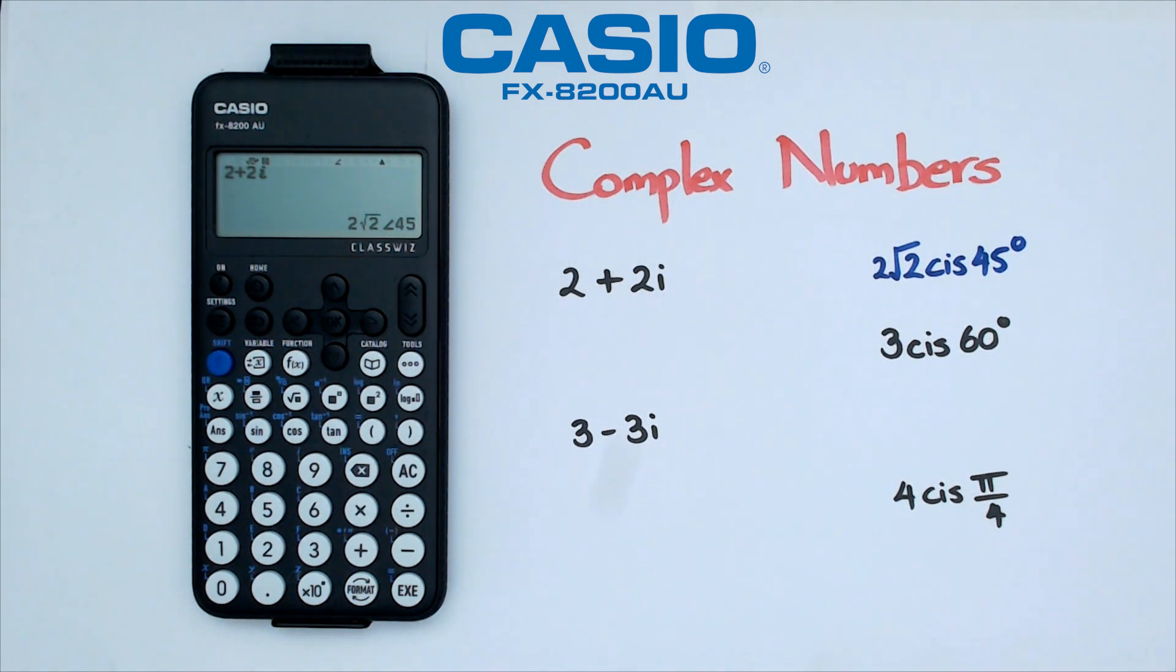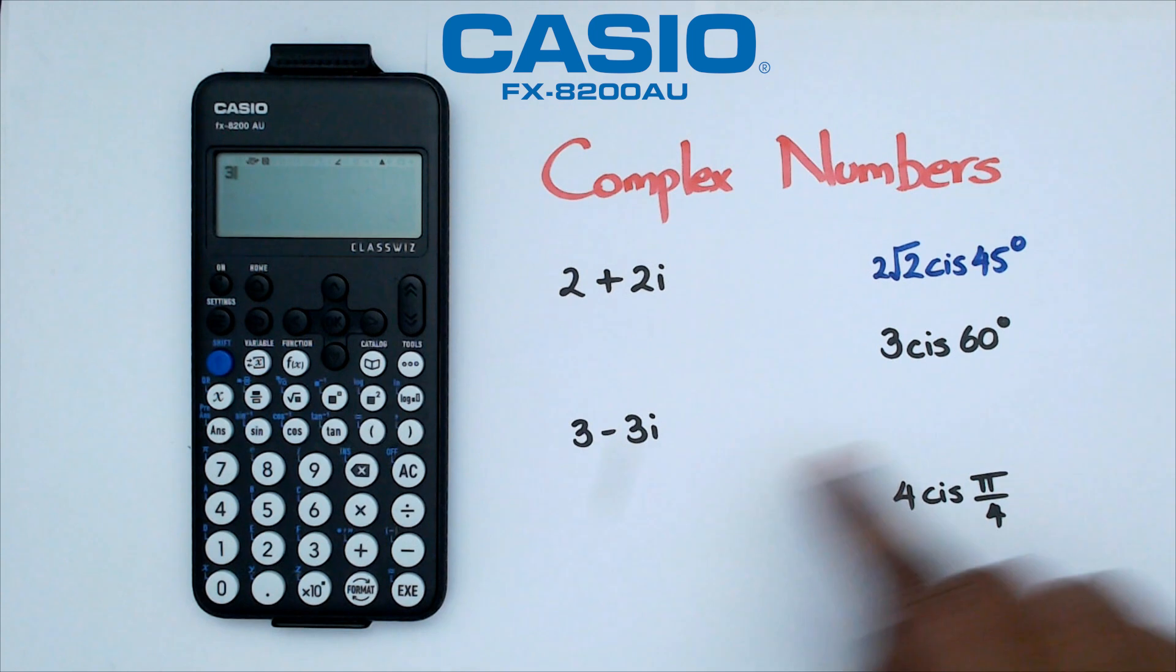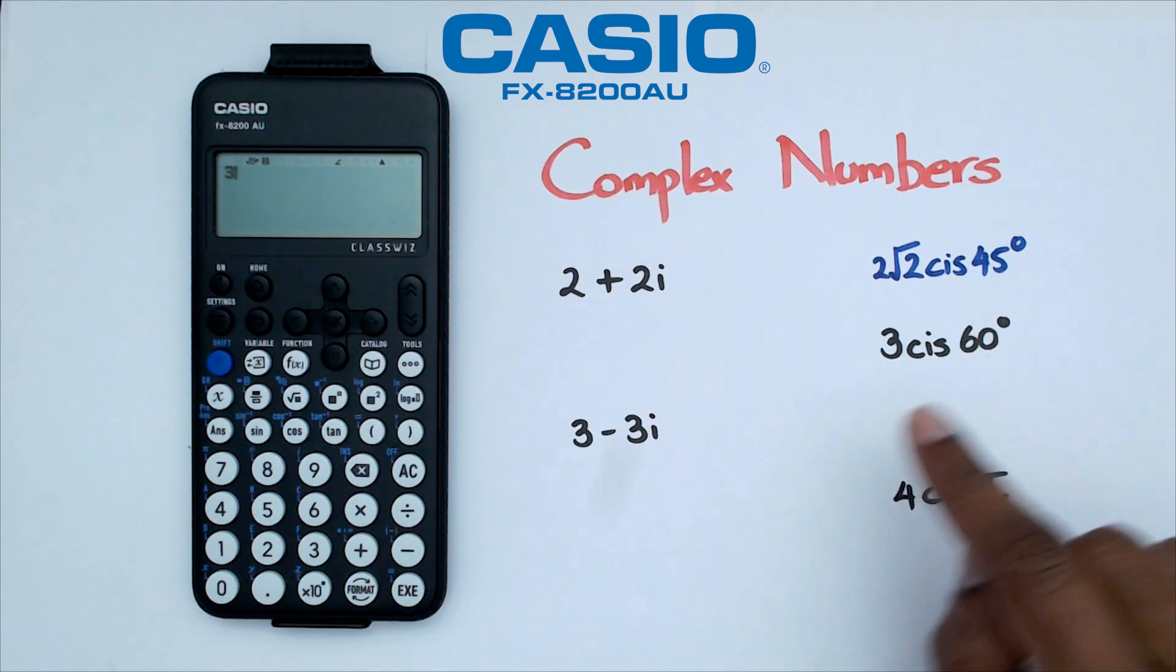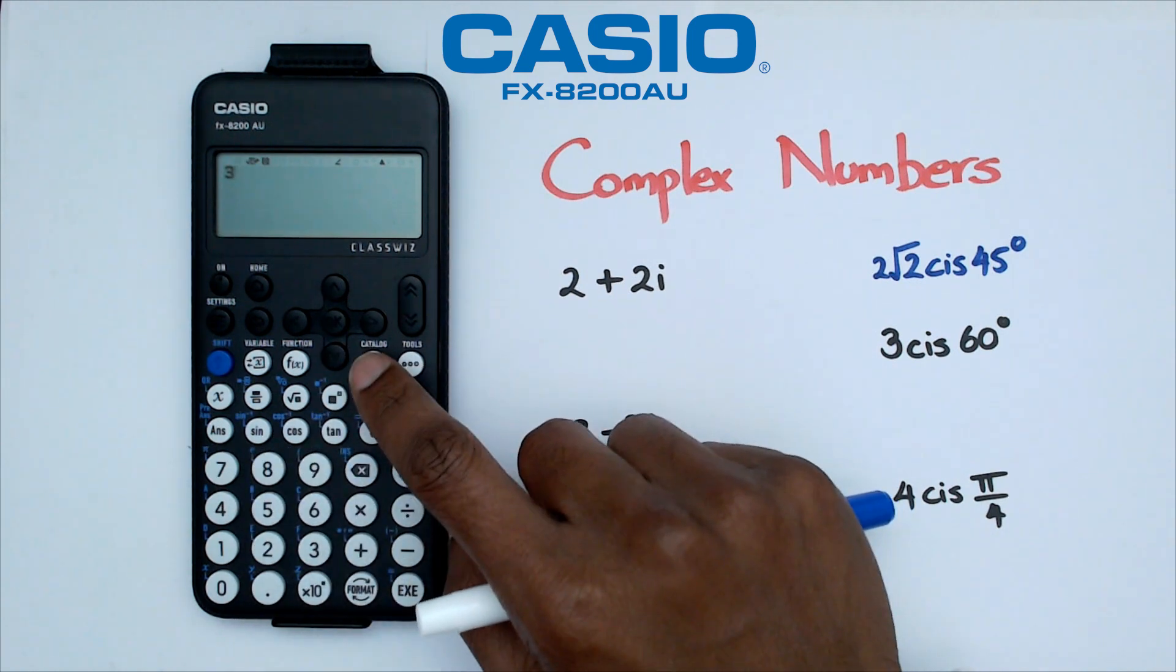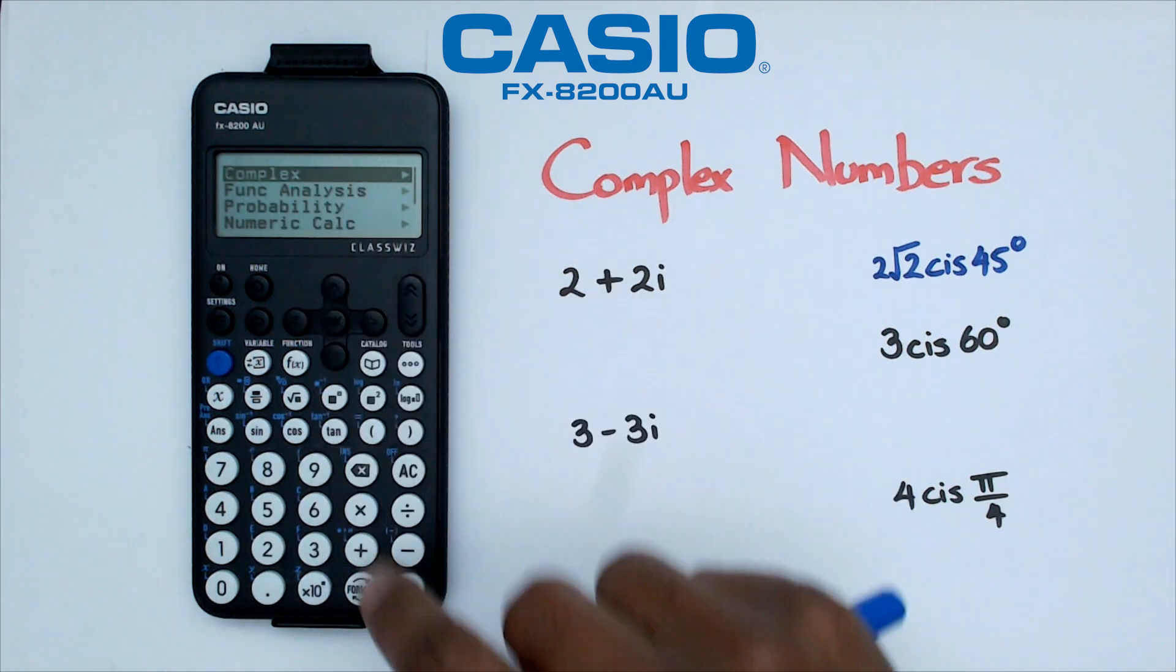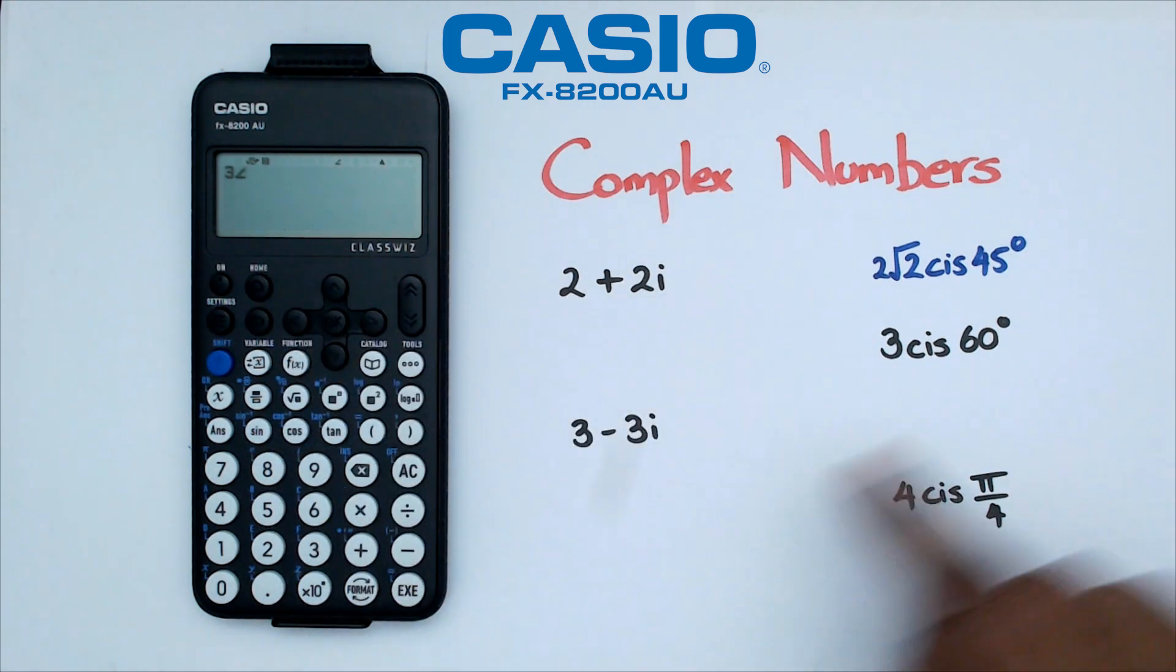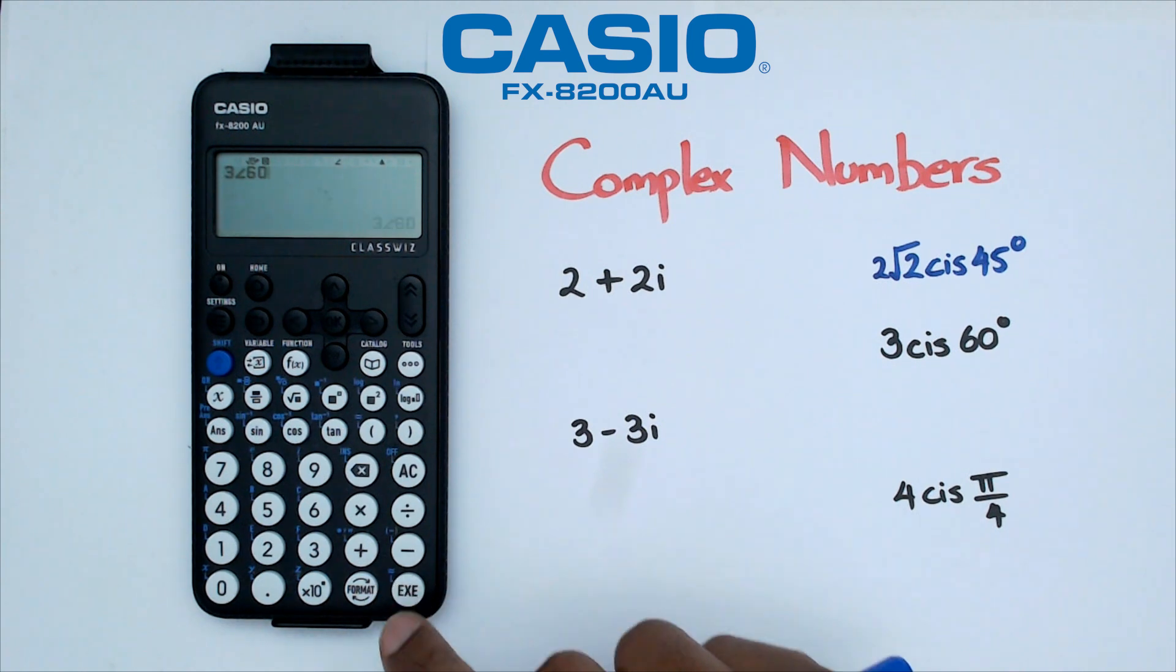How about going backwards from polar form to rectangle? We want to go from 3 cis 60 to rectangular form. So to do that, we're going to go 3. But obviously we need to figure out that symbol for cis, which is that little arrow. And where are we going to find it? That's basically in catalog. So if you go into catalog and in complex, and if you navigate your way down, you're going to see the little arrow. That's the cis button right there. And we're going to go 60. And we're going to press equals.